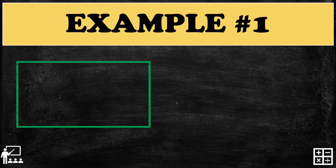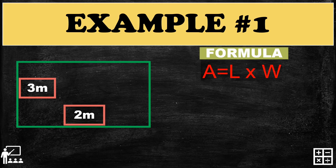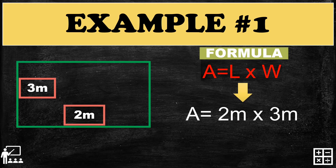Example number one: I have here a rectangle which has a length of two meters and a width of three meters. We're going to use the formula A equals L times W, so just substitute the measurements — the length is two meters and the width is three meters.